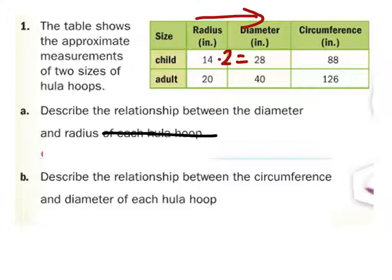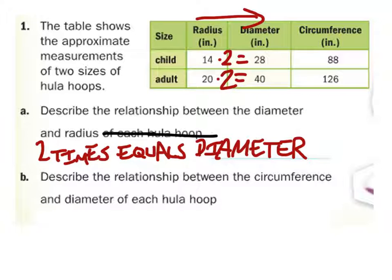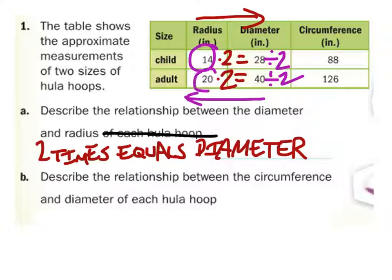14 times two is 28, and likewise 20 times two — same scale factor — is 40. So we can say two times the radius equals the diameter. If we go back in the other direction, we divide by two: 28 divided by two is 14, and 40 divided by two is 20. So half the diameter is the radius.